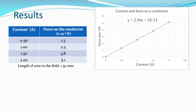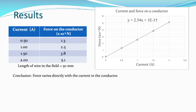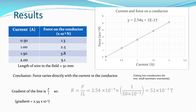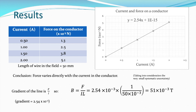We can use that gradient to determine the size of the magnetic induction. There's a direct relationship between the force and the current — F varies directly with I. Using B equals F over IL, and substituting F over I as the gradient (2.54 × 10⁻³), then multiplying by 1 over the length of the wire in the field (50 mm = 50 × 10⁻³ m), we get a magnetic induction of 51 × 10⁻³ Tesla. The manufacturer states these school magnets in the yoke produce a field of 50 millitesla — so that's a very good match.